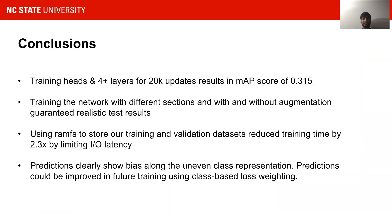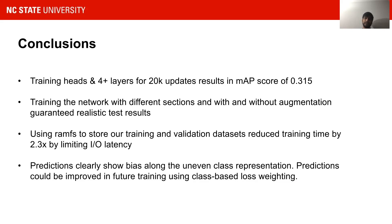In conclusion, training heads and 4+ layers of the ResNet architecture for 20 epochs results in an mAP of 0.315, which is quite good compared to the 0.5 achieved when training for 70 to 80 epochs. Training with augmentation yielded really good results. We used RMSS to store our datasets, which reduced our training time by 2.3 times. Predictions clearly show bias towards uneven class representation, which can be improved by using class-based loss weighting during training.